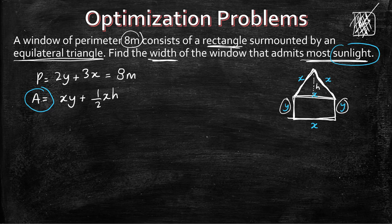In order to optimize effectively, we have to make sure the equation is in terms of one variable. Right now there's a y and there's an h. We can solve the y issue right now by rearranging the perimeter equation. We can say that y is equal to (8 minus 3x) over 2, and then plug that right in.